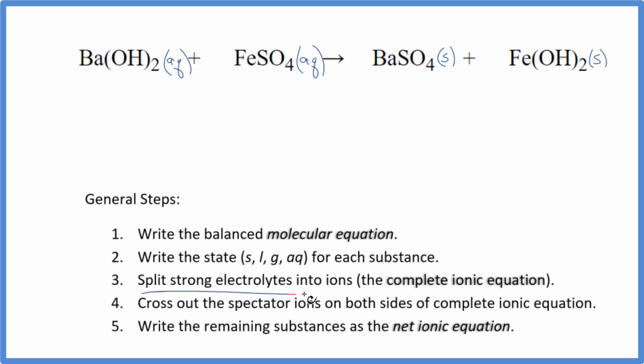Now we can split the strong electrolytes up into their ions for the complete ionic equation. So barium hydroxide, barium group 2, that'll be 2 plus, this whole hydroxide 1 minus. So we have Ba2 plus. And I won't write the states now. And then we have 2 hydroxides.